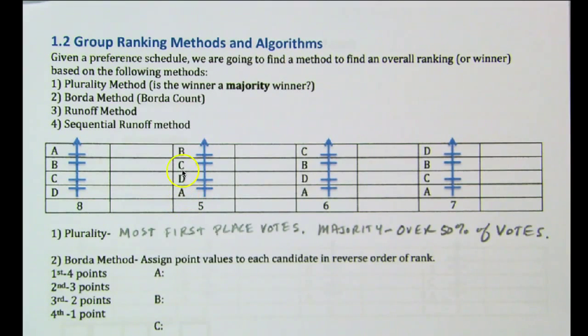If you go over here, similarly, B is the first choice of these five people. C, D, A all fall in order after that for these five. So on for six of these people with this ranking, and so on with this many people, seven of these people have this ranking. So if we look at first place votes, we see that A got eight first place votes here. B got five, C got six, and D got seven.